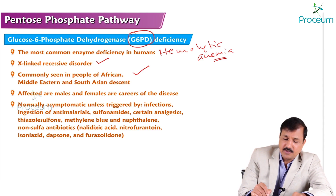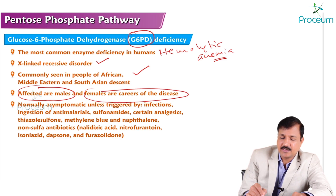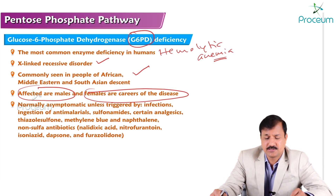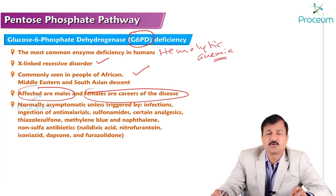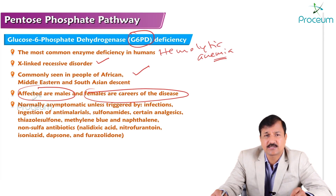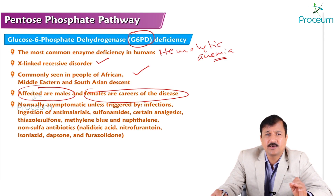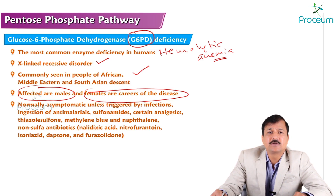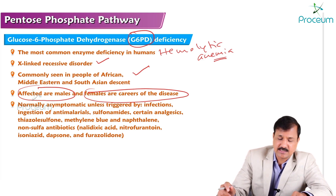Affected individuals are males and females act as carriers because females have two X chromosomes. If one X chromosome is defective, the other X chromosome will compensate for the glucose-6-phosphate dehydrogenase synthesis needed. Males have only one X chromosome, and if that X chromosome is defective, they will suffer from severe deficiency of glucose-6-phosphate dehydrogenase enzyme.